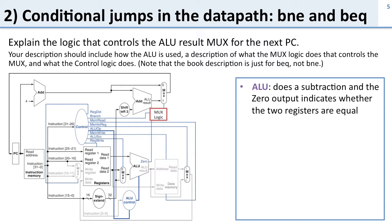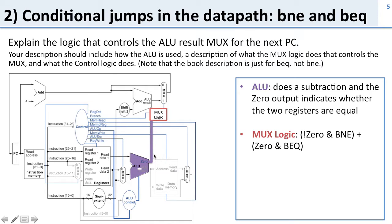For branch equal and branch not equal, the ALU is going to do a subtraction. I'm going to take the result-zero output and send that up to the mux logic, which will use the result to know if it should branch or not. The mux logic will say: if the result is not zero and it's a branch not equal, they're not equal and I'm supposed to branch if not equal, so I take the branch. Or if the result is zero and it's a branch equal, they are equal and I do the branch.